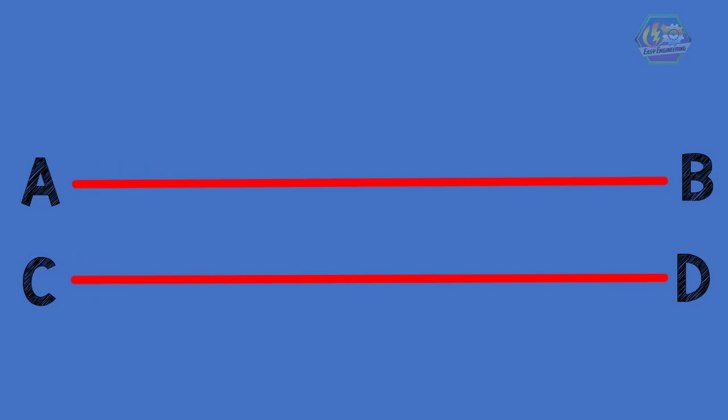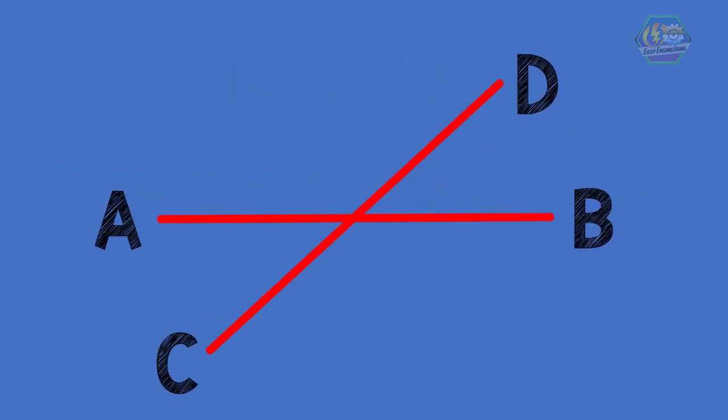Now what if we will move one line? That will look like this. Obviously they are not parallel lines anymore since they cross each other. When two lines cross each other we call it intersect, and the point where they intersect is called intersection.